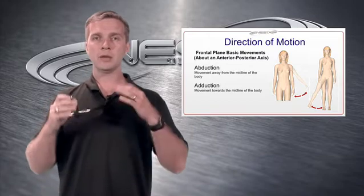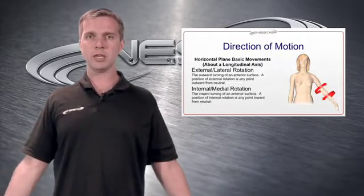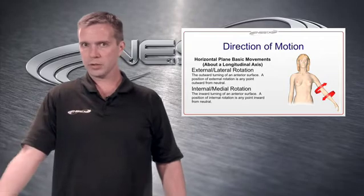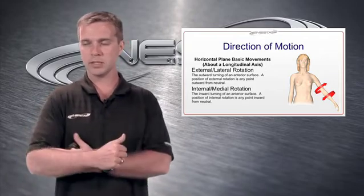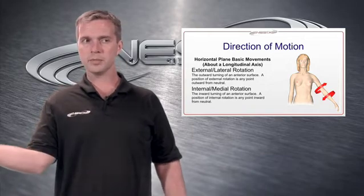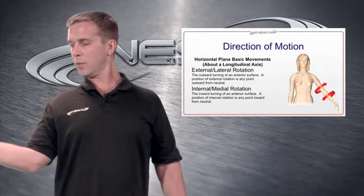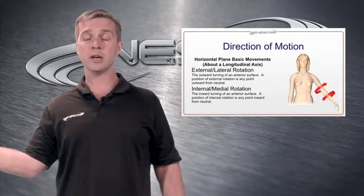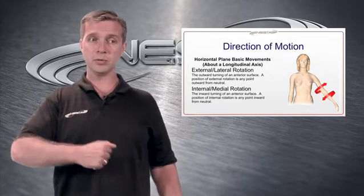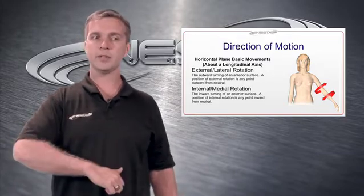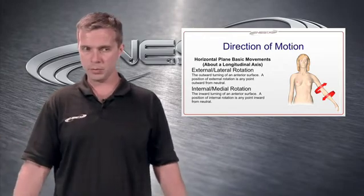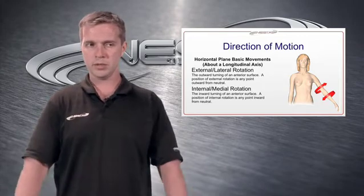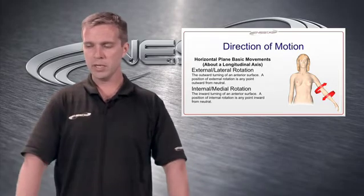Horizontal plane movement about the longitudinal axis is internal and external rotation. External rotation — also called lateral rotation — is an outward turning of an anterior surface. Internal or medial rotation is an inward turning of an anterior surface. A position of internal rotation is any point inward from neutral. So you have neutral, inward rotation, and external rotation — or medial and lateral rotation.